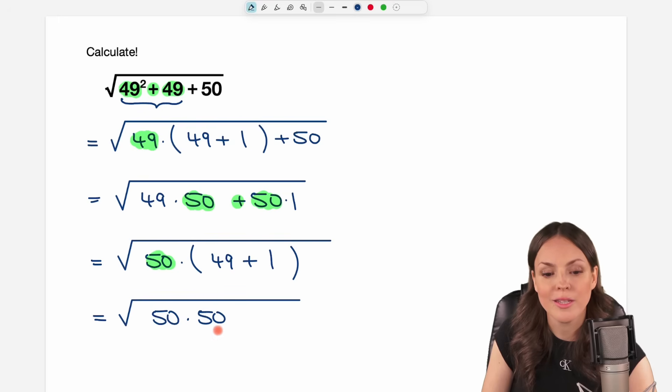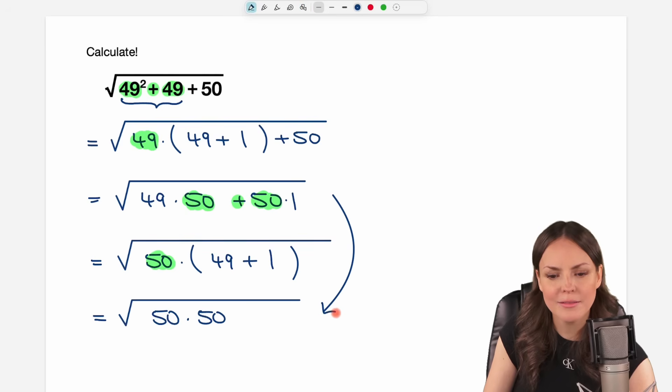We have 50 times 49 plus 1 equals 50. Before we keep going with our calculations here, I just want to show you that this step here could have been a little faster. Because if you have 49 of your green 50s and you just want to add one more of the green 50s, then in total you have 50 of your green 50s. So this step here is not necessary. But never mind now that we're here.